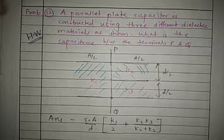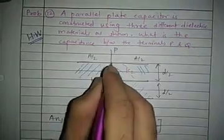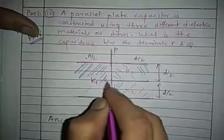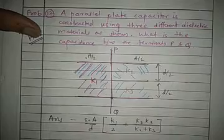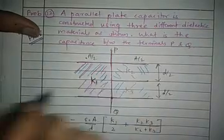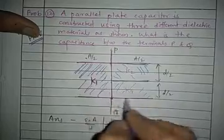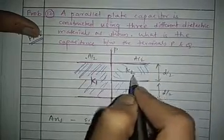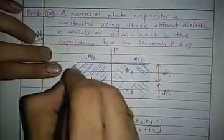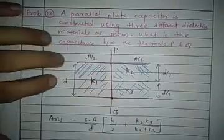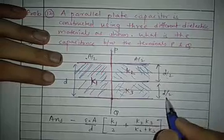This is a combination problem with 3 dielectrics. The total area is A, divided into half-half: A/2 and A/2. One half has dielectric K1. The remaining half is again divided — one part is K2 and the other is K3. Here D is constant, but for K2 and K3 the distance is divided as D/2 and D/2.